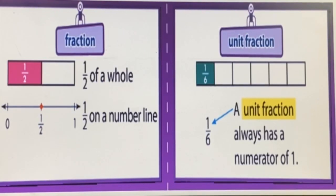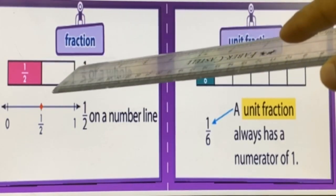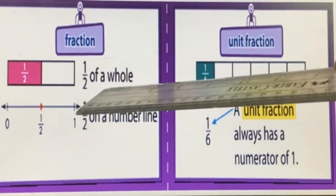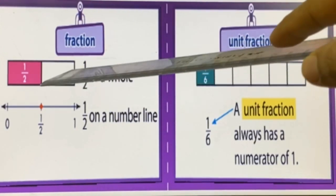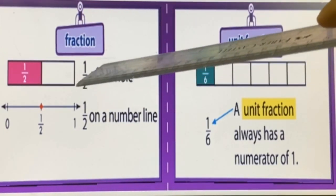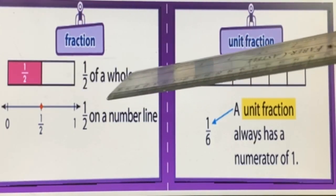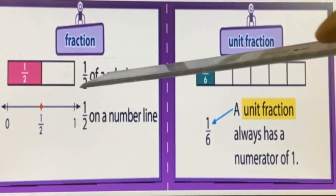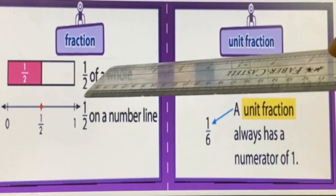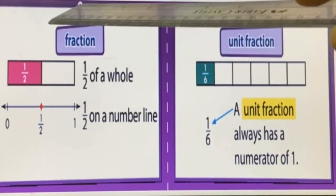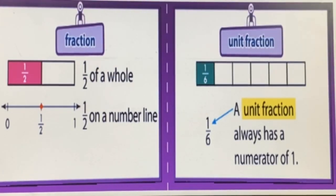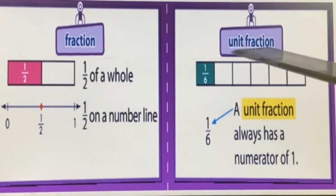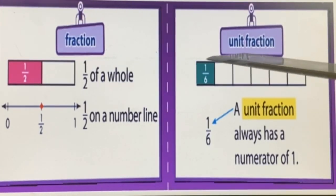The next word is fraction. When we write a number in this form with a bar between two numbers, that is called a fraction. We have a numerator, a denominator, and there is a fraction bar between the two numbers. That system is called a fraction.